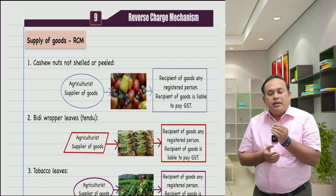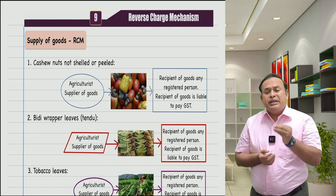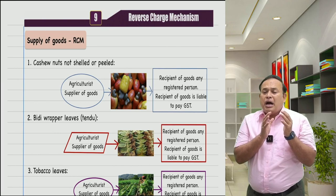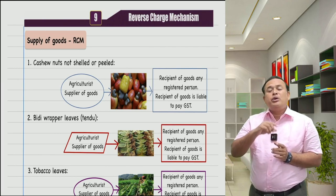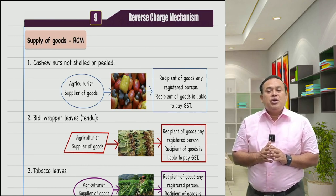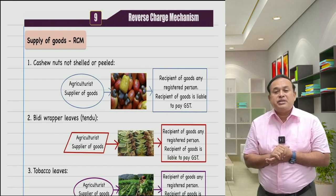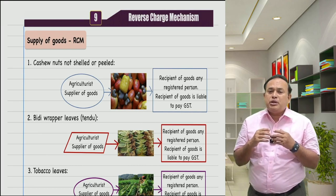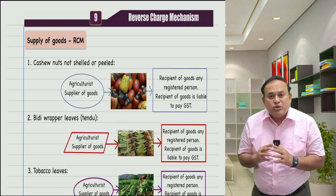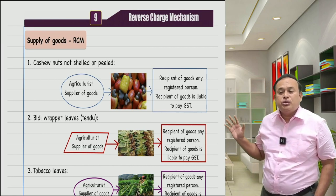Namaste. Referring to the reverse charge mechanism: the Government of India, upon the recommendation of the GST Council, has notified a list of identified goods where the recipient is only liable to pay GST, not the supplier. Likewise, there is a list of services where the recipient is liable to pay GST, as identified by notification. In general, for a taxable supply, GST applies on the supplier — but for notified goods or services, only the recipient is liable to pay GST.